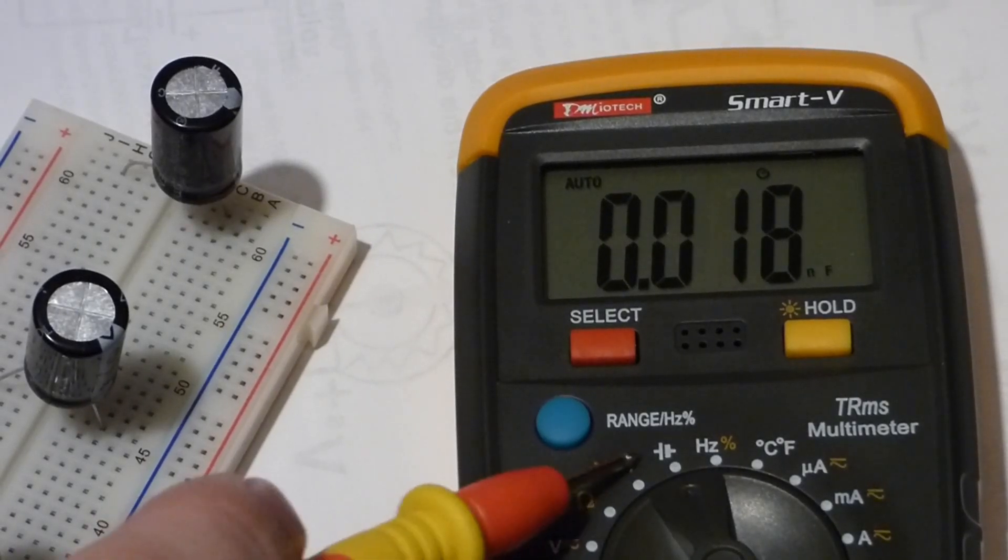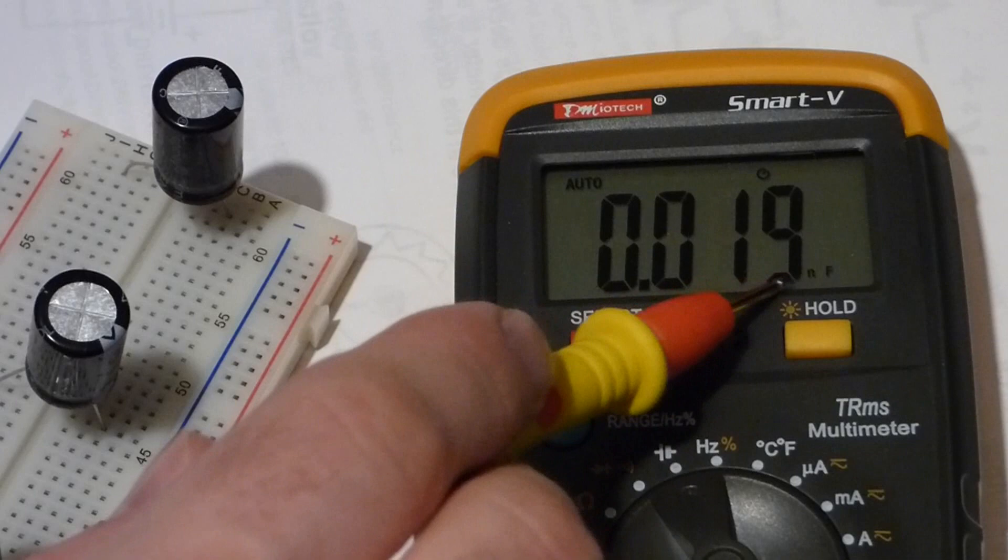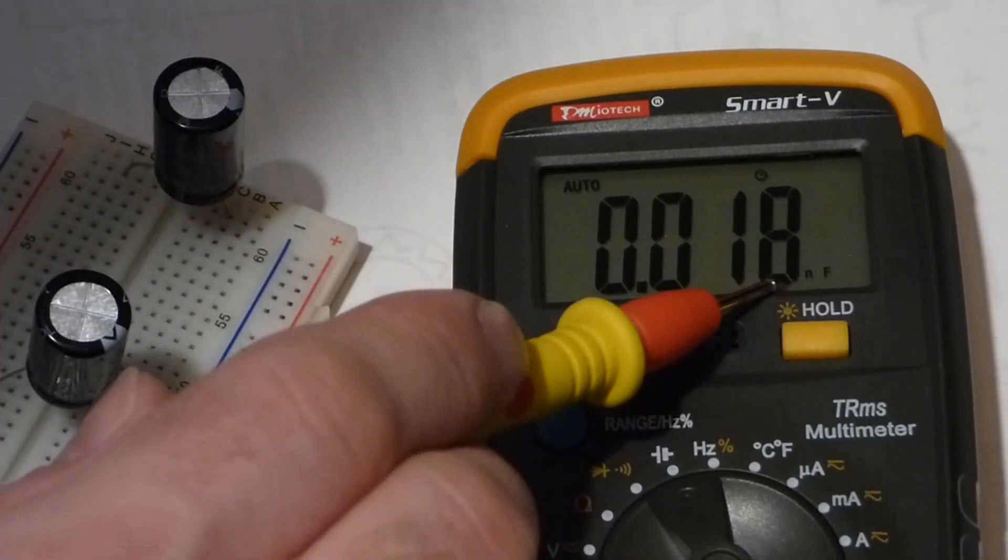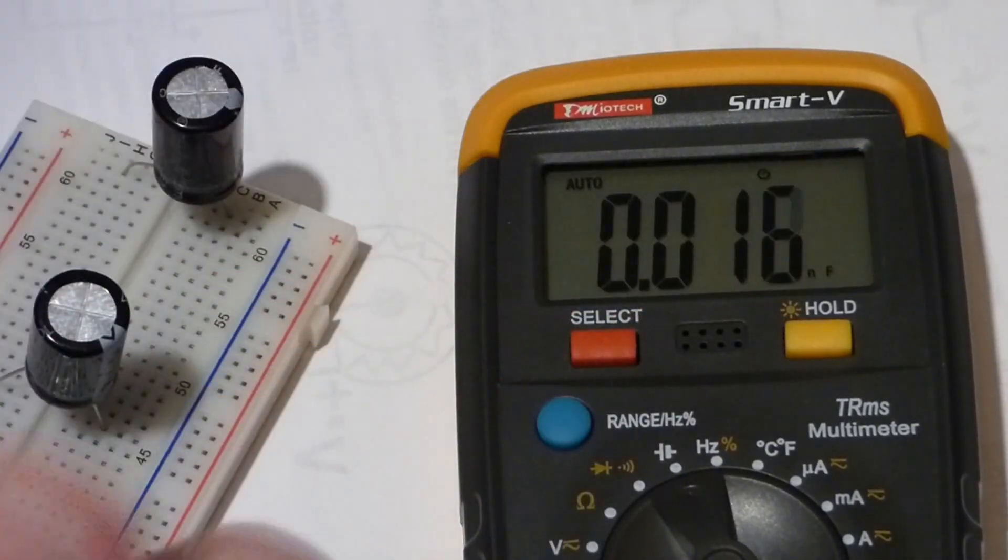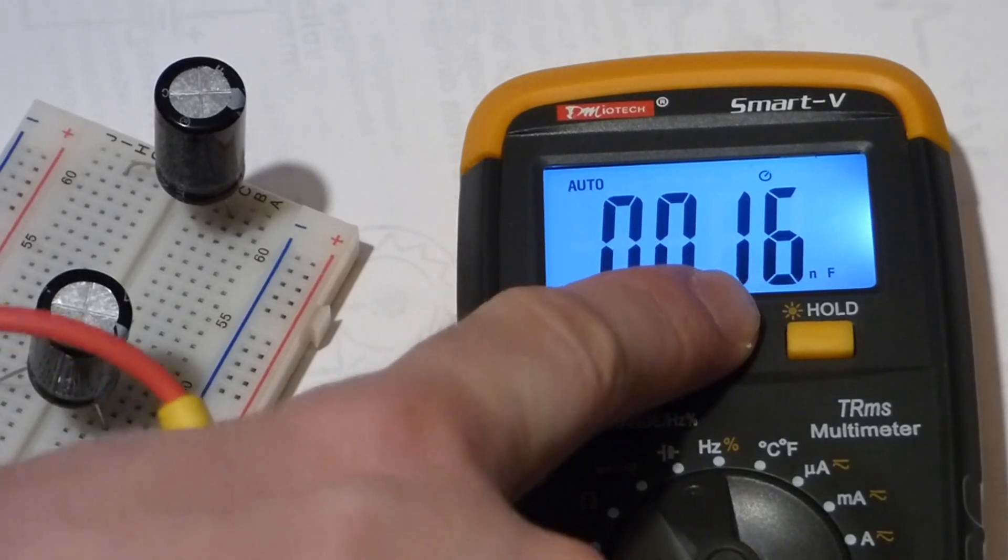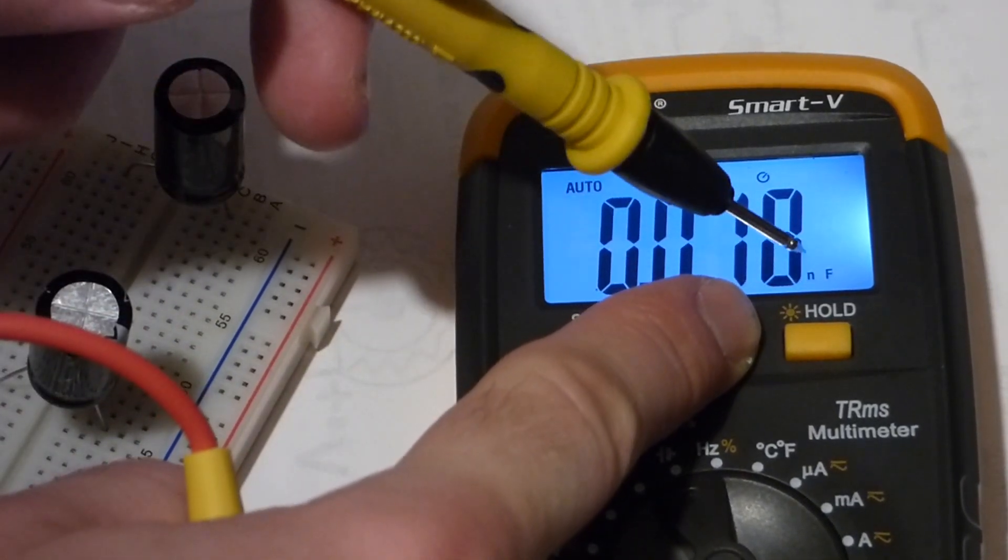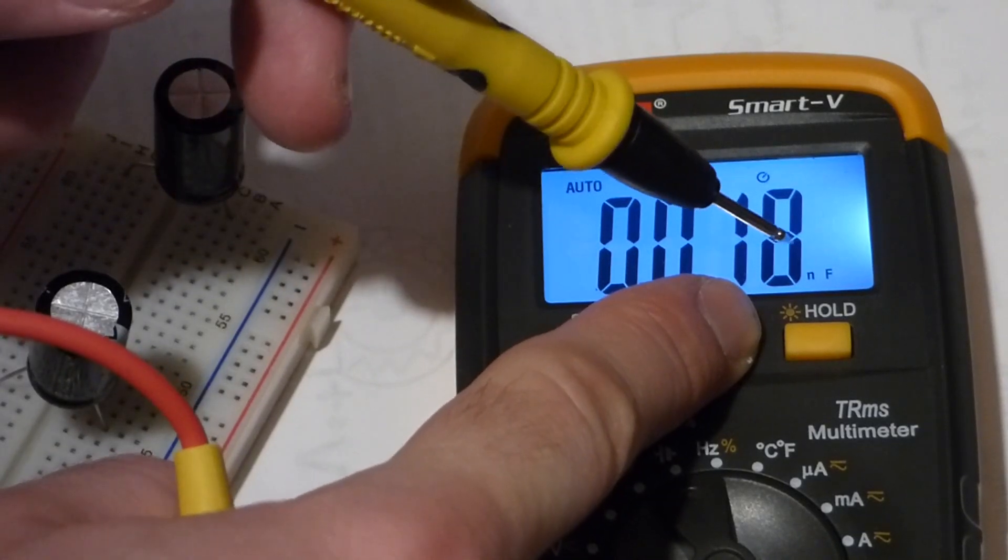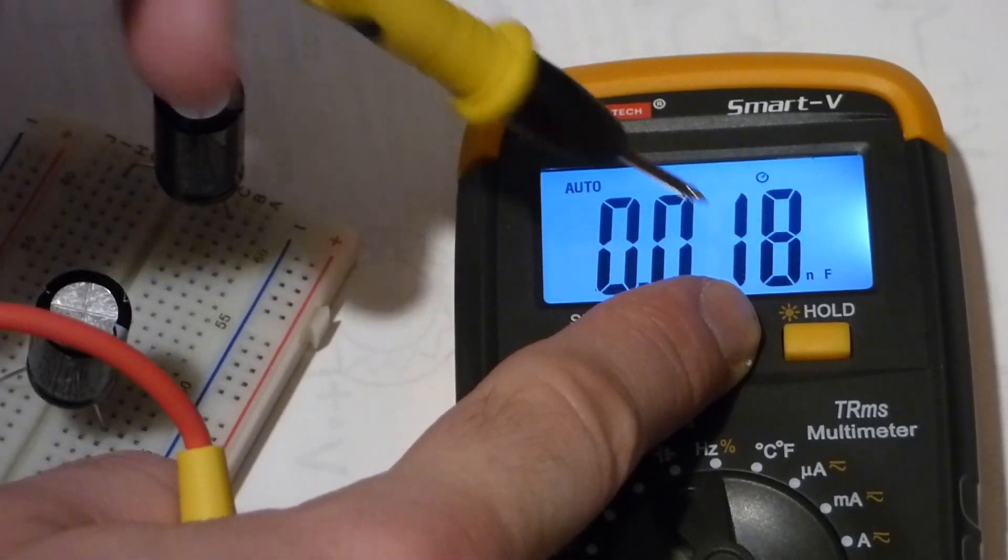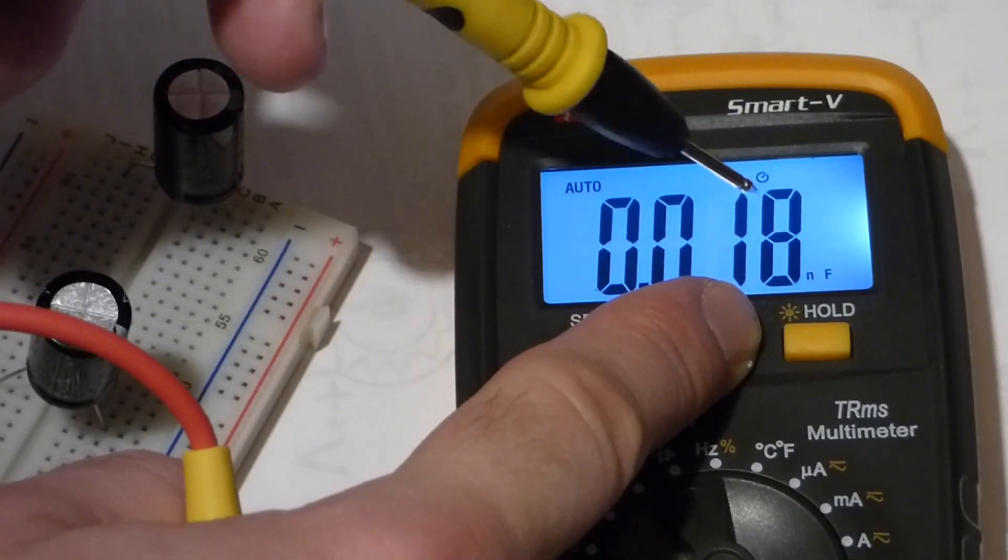Now we have our meter set to measure capacitors. Over here it says NF. It turns on when you cover the sensor there. NF means nanofarad, and that's one billionth of a farad—billion with a B. You need one billion nanofarads to equal one farad. As I said, these are microfarads, so we're going to measure this one.